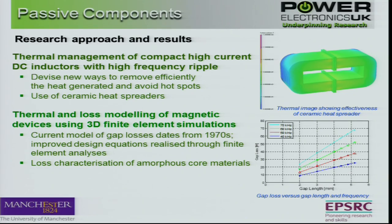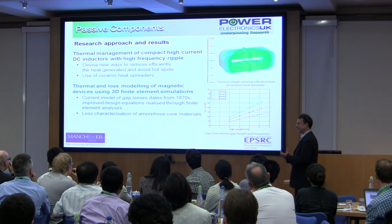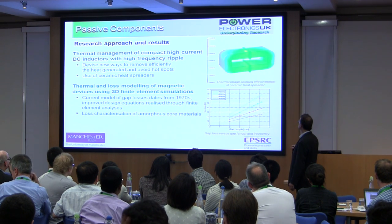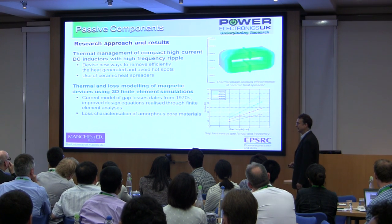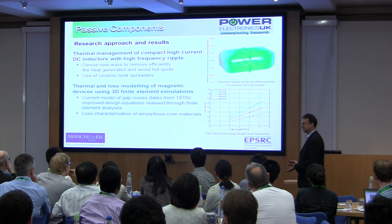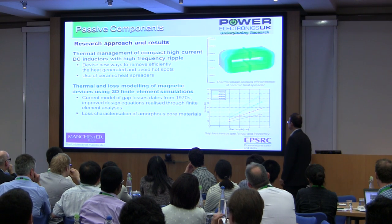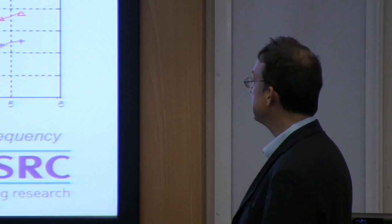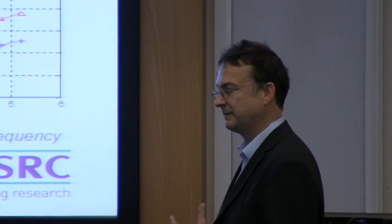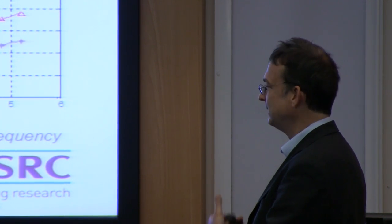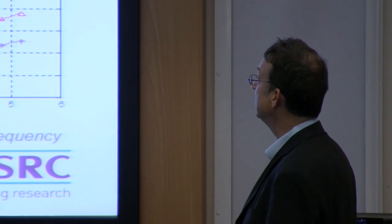Here are some results on the work that Manchester will be looking at in terms of improving the thermal management of a wound component. If you've got a core with an air gap, you get nasty fringing fluxes around the air gap — those cause localised heating in the lamination and in conductors sitting around there. You can mitigate that through various means; one way is to put heat spreaders in, which calms down the temperature gradient within the device. The other diagram shows the variation in gap loss versus gap length and operating frequency, looking at techniques of reducing that through modelling and finding new ways to reduce the problem, potentially incorporating new magnetic materials in these wound components.